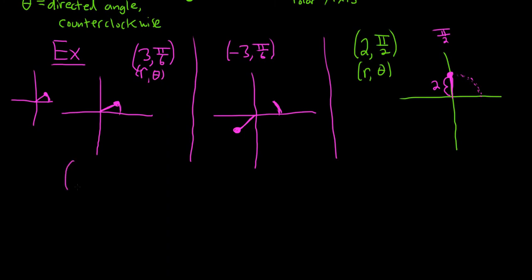Let's do another one. Let's say it was (-2, π/2). In this case, you would travel π/2, so here we are. Here's π/2. But it's negative 2, so you go the other way. So it would be here, and this distance here would be 2.